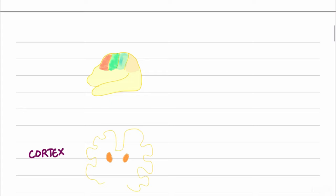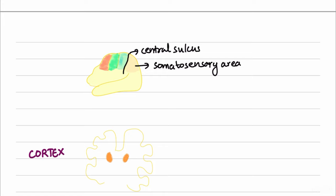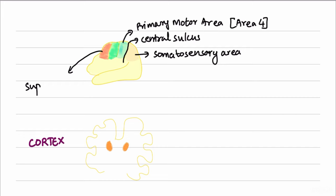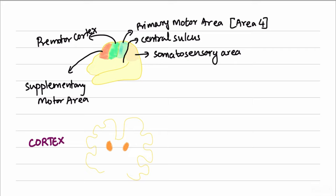Our pyramidal tract starts from three areas of the frontal cortex. The central sulcus divides the sensory and motor regions: posterior to it is the somatosensory area, and just anterior is the primary motor area, which is involved in fine skilled movements — Brodmann's area 4. Anterior to that we have the supplementary motor area and the pre-motor cortex, which modulate the function of the primary motor area.